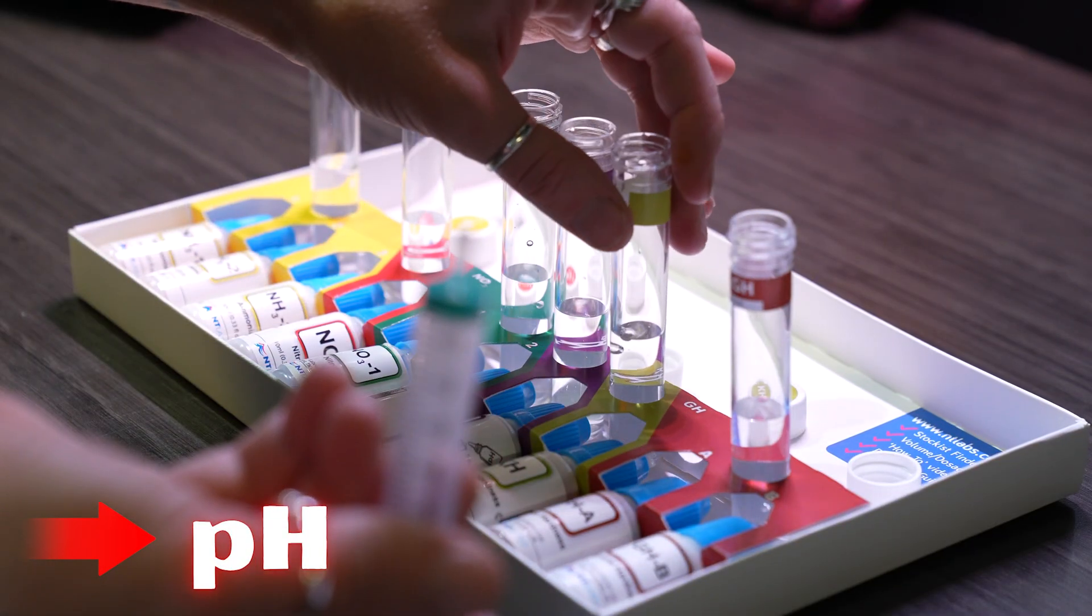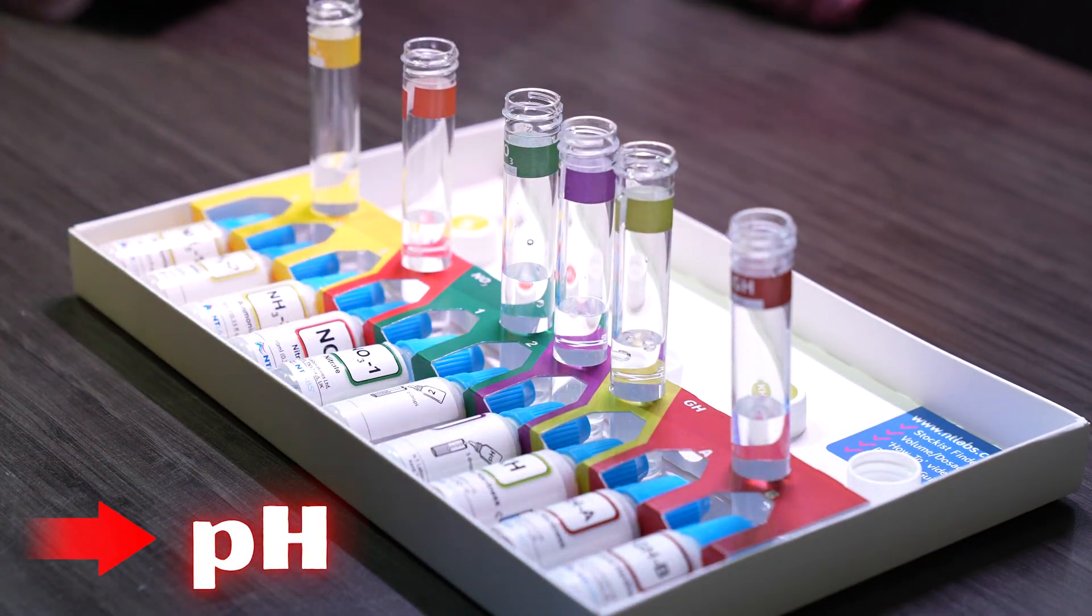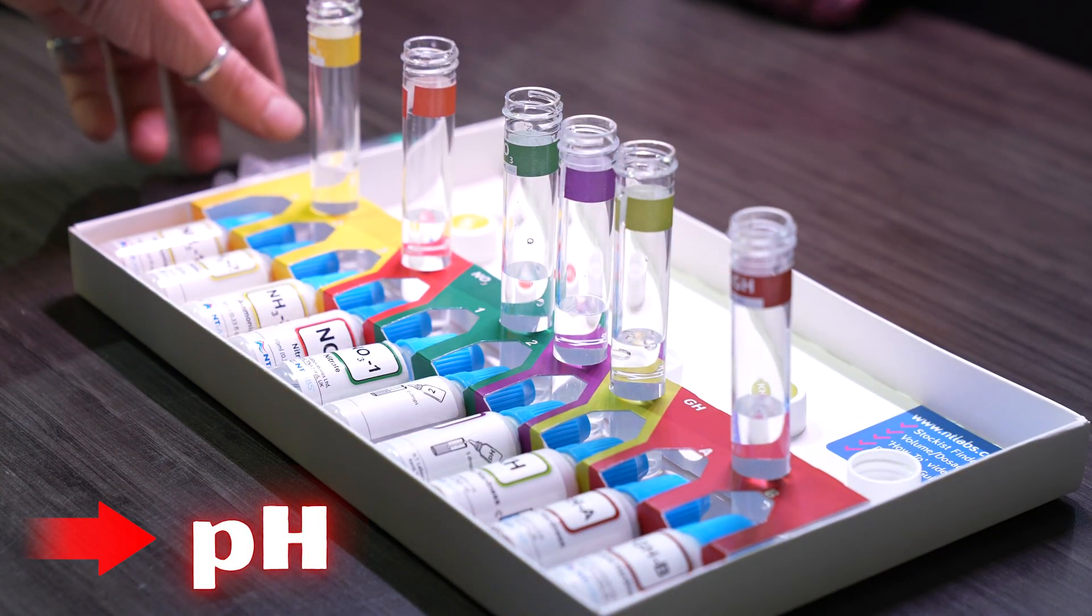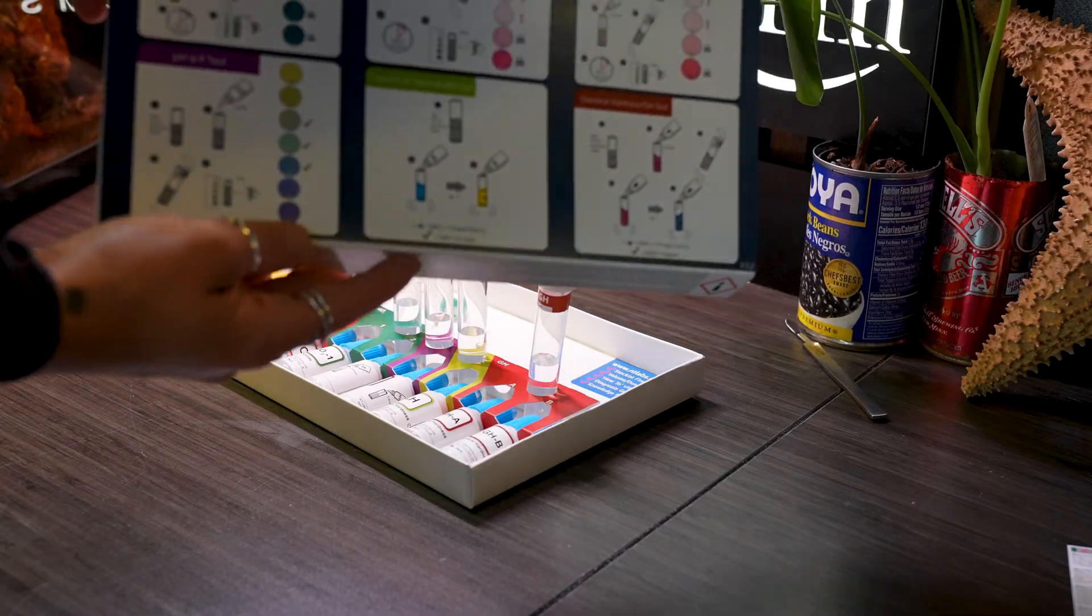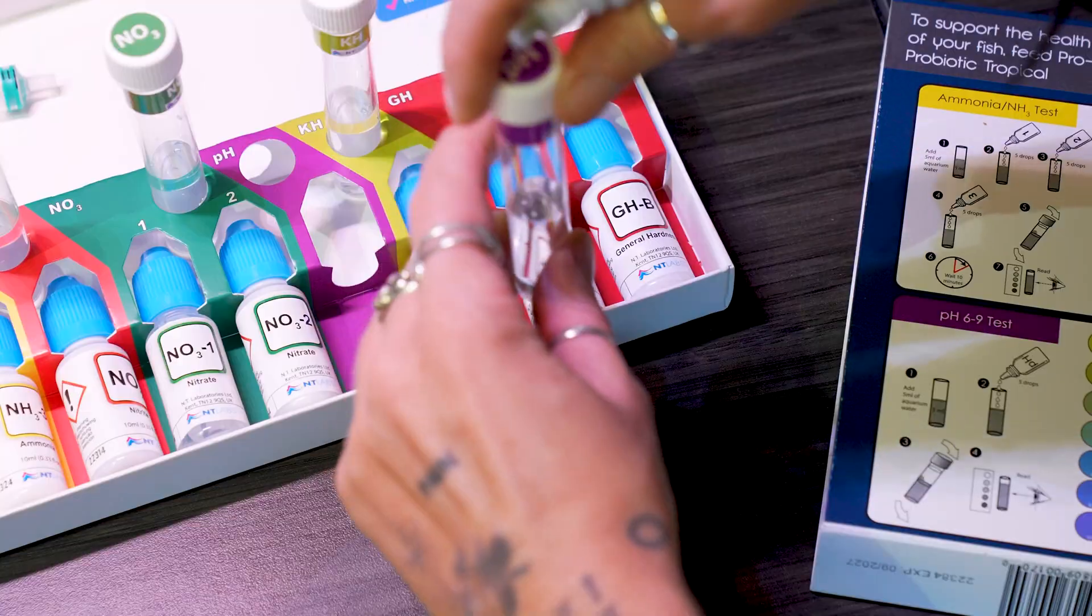For no practical reason, I'm going to start off with pH. pH is the measure of alkalinity or acidity in the water. If you flip the box around, you'll see it has super clear and easy to follow instructions.